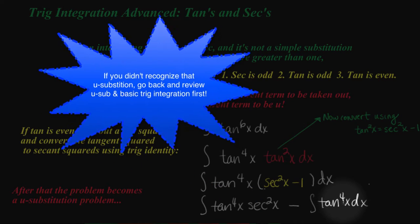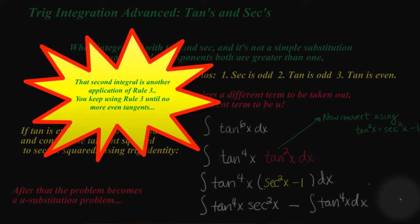But guess what we're going to have to do again here? Tangent is even. So we're going to have to pull out a tan squared and do it one more time. We've got to keep going until there are no more tangents that are even left.